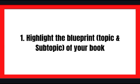The first thing now is to highlight the blueprint — that is the topic and subtopic that will be in the different chapters of your book. We've done this traditionally in former videos, and we also went ahead to search for books on Amazon that we can model, looking inside the book to pick the topics and subtopics — the blueprint that will be in each chapter.